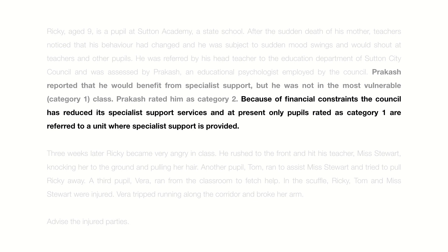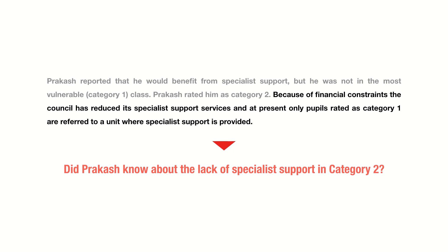But keeping that aside, what I want you to focus on from these two facts is whether Prakash knew about the lack of specialist support not being allocated to category two. Because if you look at the facts, what they do specify is that Prakash has decided, based on the circumstances, to categorize Ricky into category two as opposed to one. Only subsequently are we told that specialist support is only available for category one pupils, as opposed to category two.